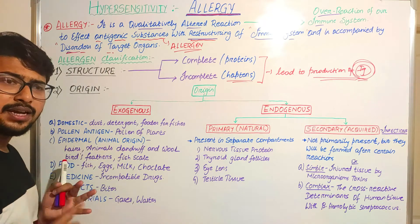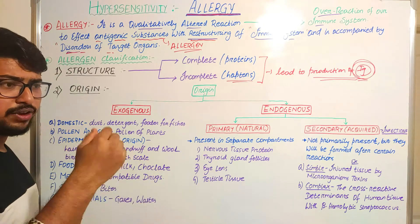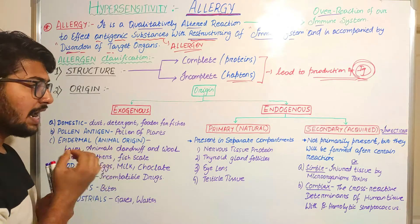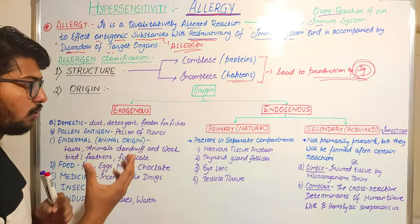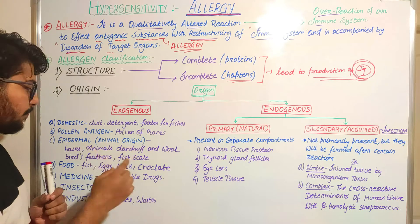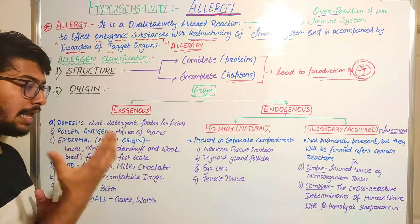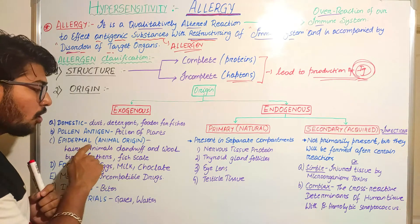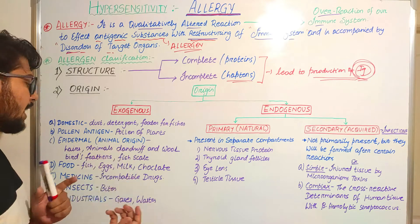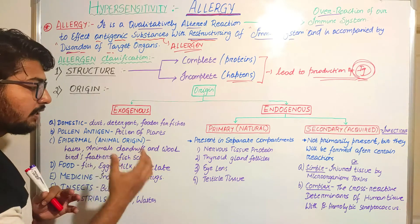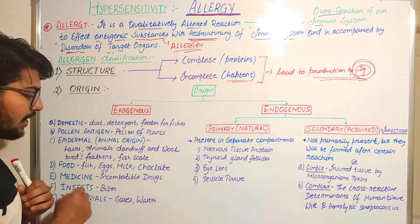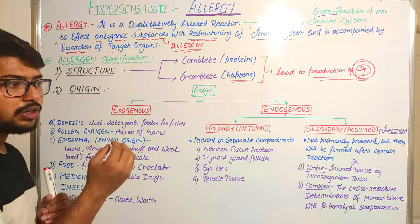Exogenous allergen examples include domestic allergens like dust, detergents, or fish food. Pollen grains are responsible for pollen antigen allergy. Epidermal or animal origin allergens include products from animals such as animal hair, dandruff, wool, bird feathers, or fish scales. Next comes food allergy — foods that cause allergy in some people who are not compatible with them.